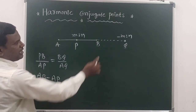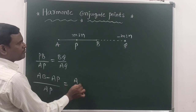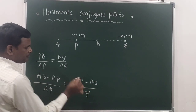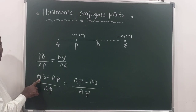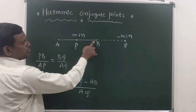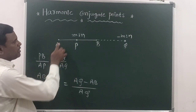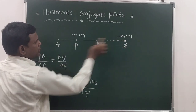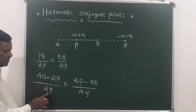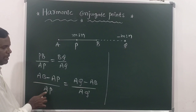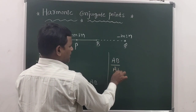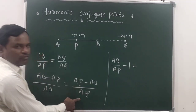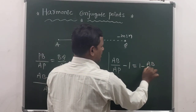Which is equal to, in place of BQ, you can write AQ minus AB, divided by AQ. In place of PB write AB minus AP, and in place of BQ write AQ minus AB. Dividing through by AP and AQ respectively, you get AB by AP minus 1 which is equal to 1 minus AB by AQ.